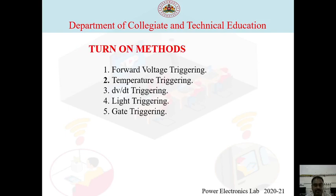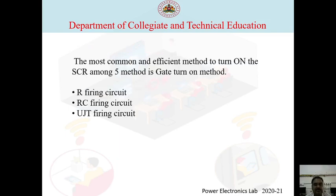The different turn-on methods are: first, forward voltage triggering; second, temperature triggering; third, dv/dt triggering; fourth, light triggering; and fifth, gate triggering. Among these five methods, the most common and efficient method to turn on the SCR is the gate turn-on method.